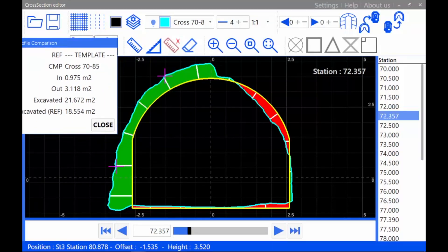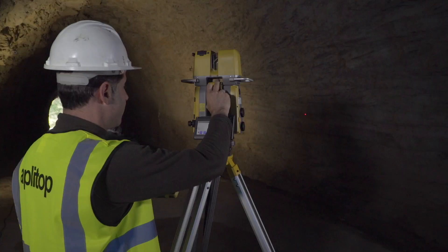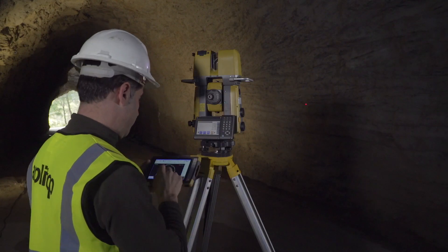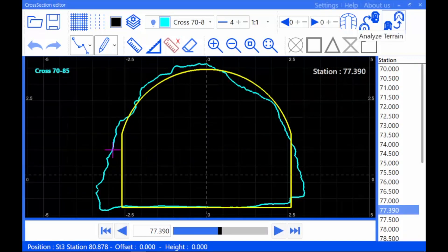Selecting any point of the profile on the screen, the laser pointer marks the position in the tunnel. On the other hand, measuring any point in the tunnel, project and as-built profiles after corresponding stations are represented.